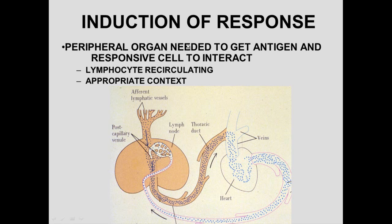For induction of the immune response, antigens must come into contact with reactive cells in the lymph node. Lymphocytes exit the blood through the post-capillary high endothelial venules into the lymph node. Other lymphocytes also enter via the afferent lymphatics, then exit through the efferent lymphatics, through the thoracic duct, back into the bloodstream, and recycle into another lymph node to find their antigen.